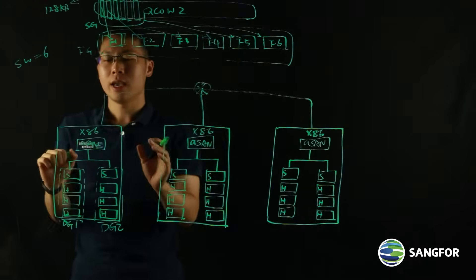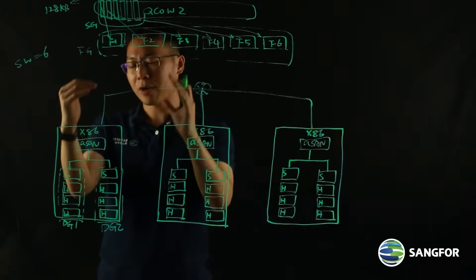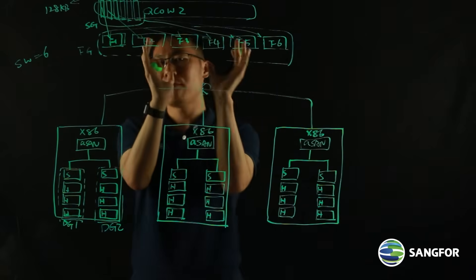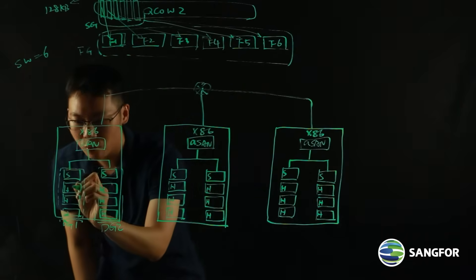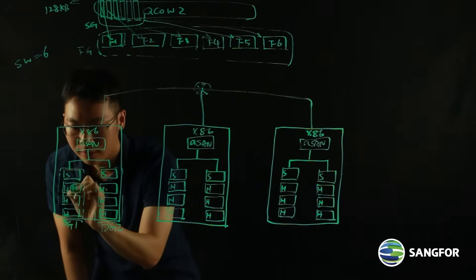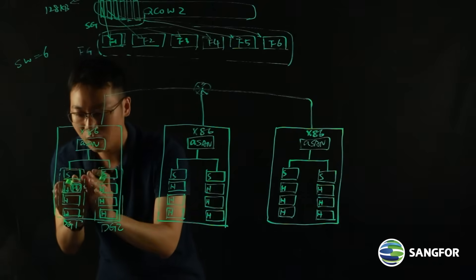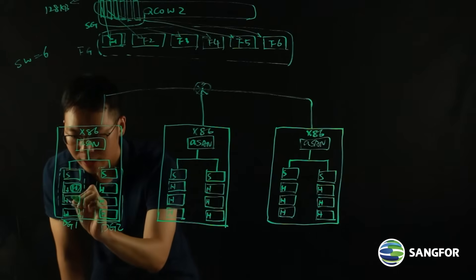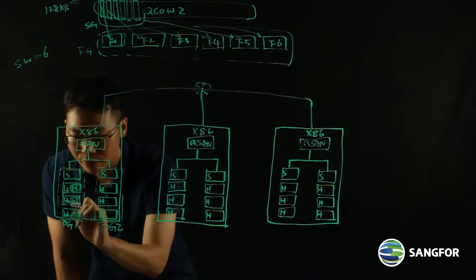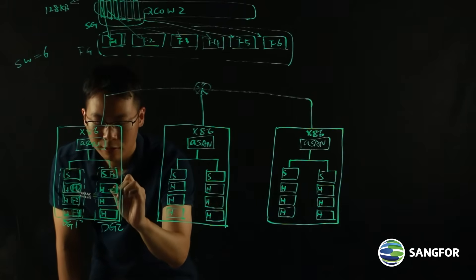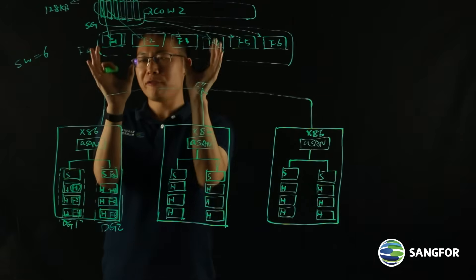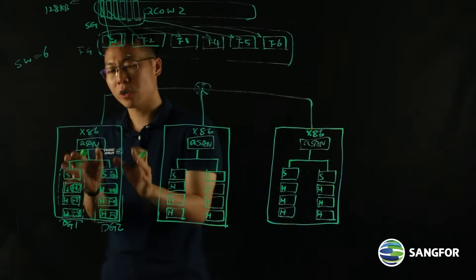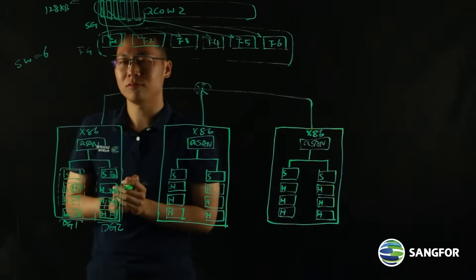Stripe 1 is assigned to fragment 1, stripe 2 to fragment 2, and stripe 6 to fragment 6, and so on. When you associate fragments to these groups, these fragments will be stored on the disks inside the node. Fragment 1 will be stored on the hard drive in disk group 1, and fragments 2 through 6 are similarly stored. This fragment group is dispersed and distributed across the disks inside the disk groups.